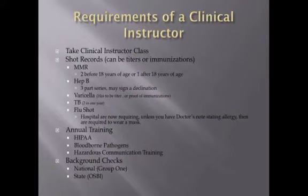We also need your shot records — this can be titers or proof of immunizations. They are MMR: you need two before the age of 18 or one after the age of 18. HEP-B is a three-part series, or you may sign the declination form. Varicella, or the chicken pox, must be a titer or proof of having the vaccine.